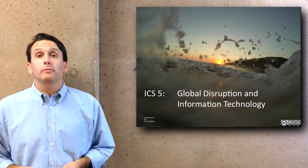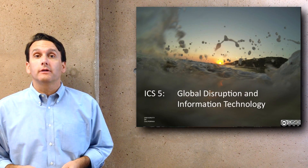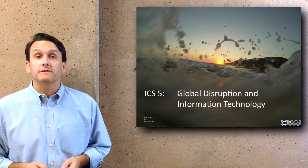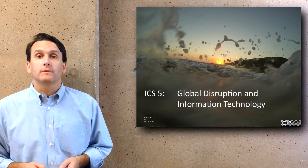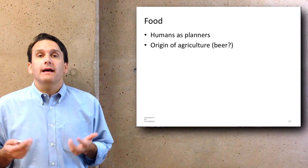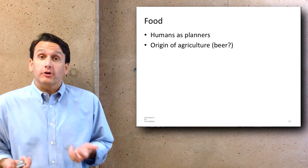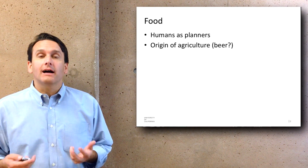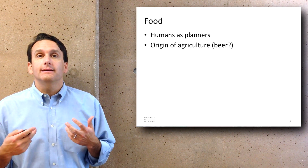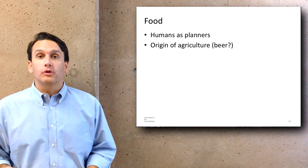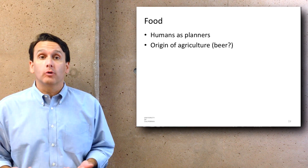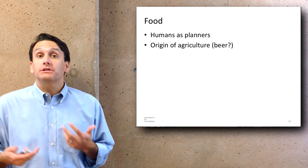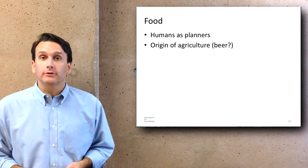Welcome back. In this lecture we'll be talking about food as it relates to the topics of this course. Humans as a species are very good planners and one of the main kinds of planning that we do is to allow for the production of more and more food, and one of the main ways we do this is through agriculture.